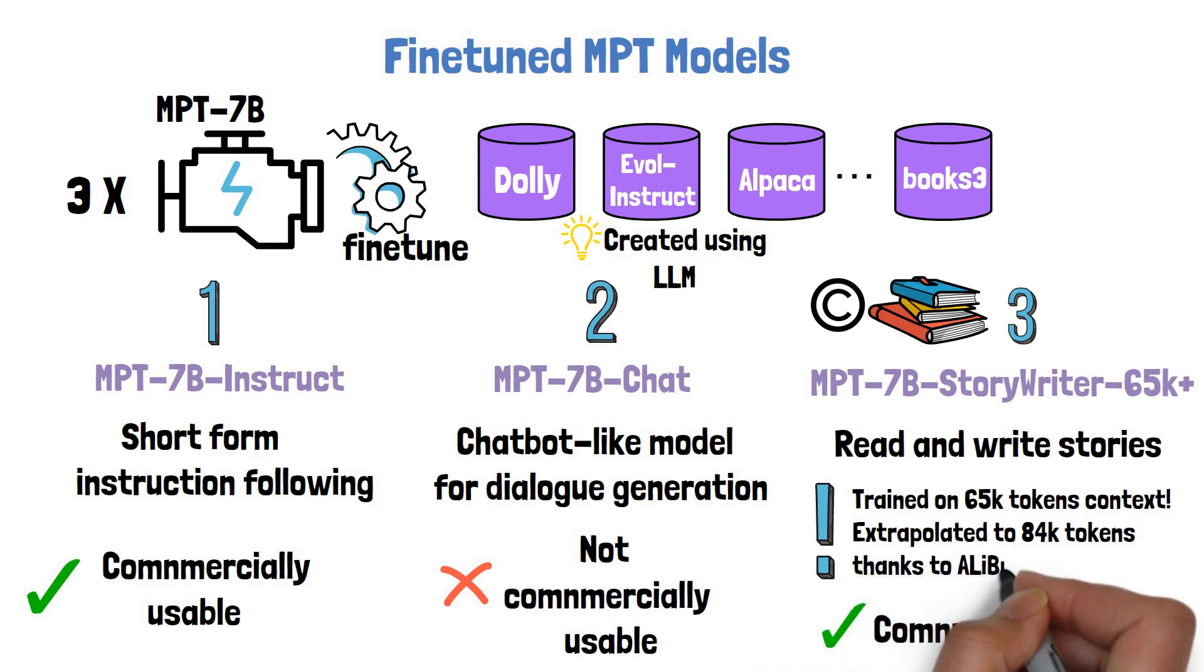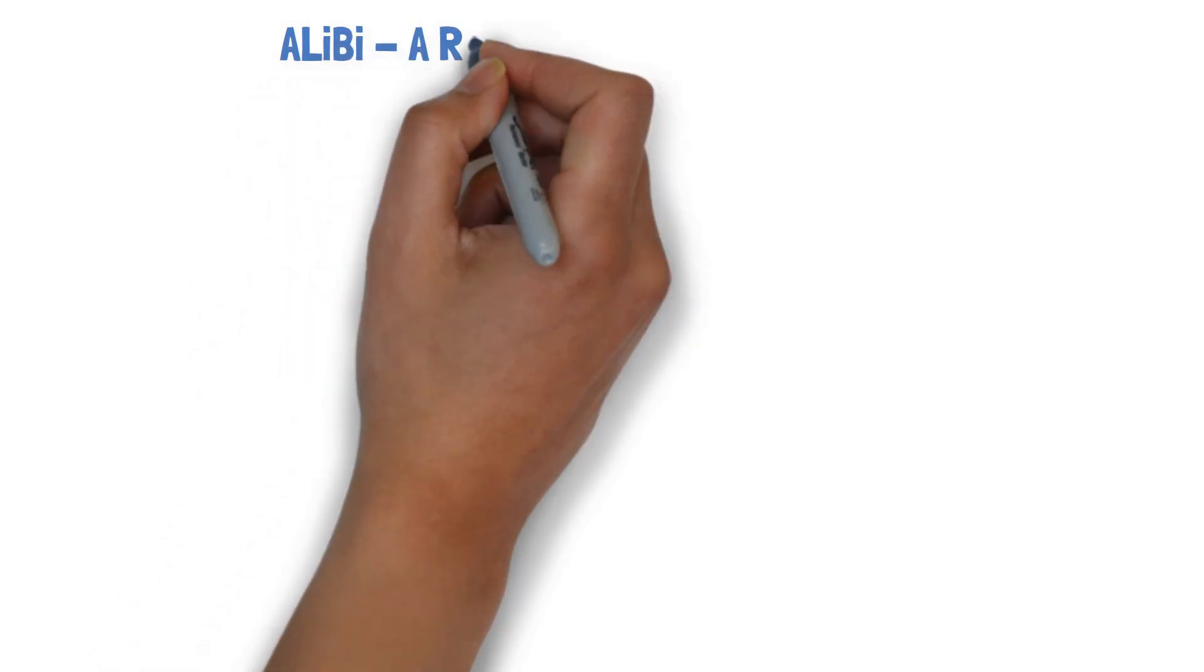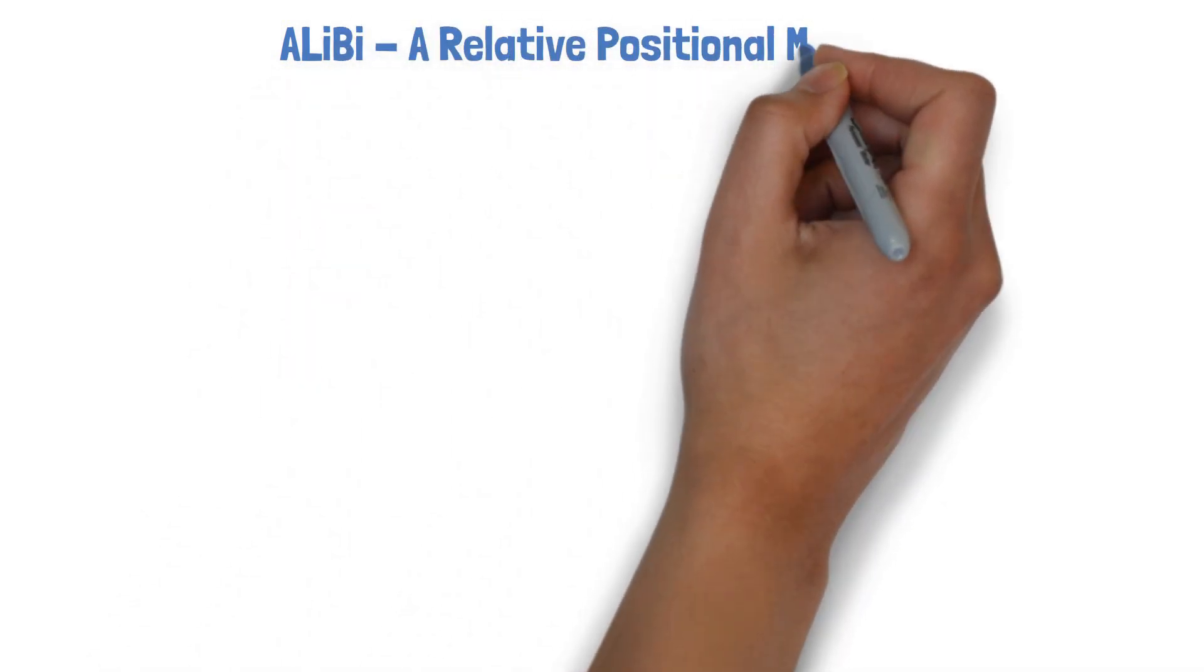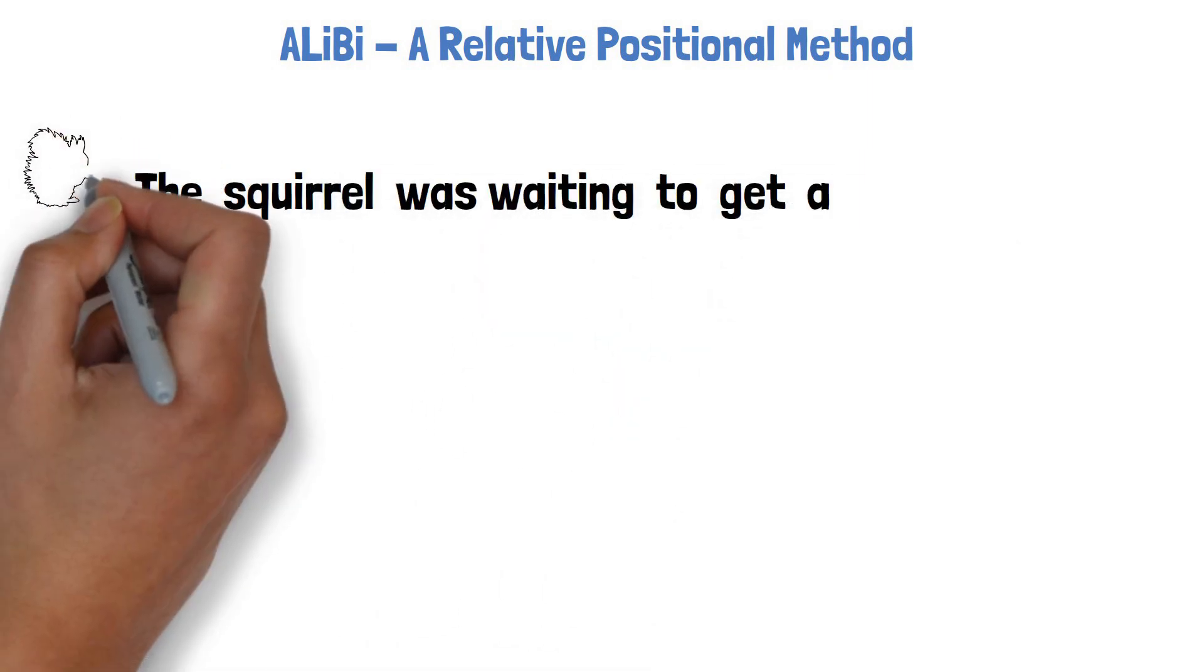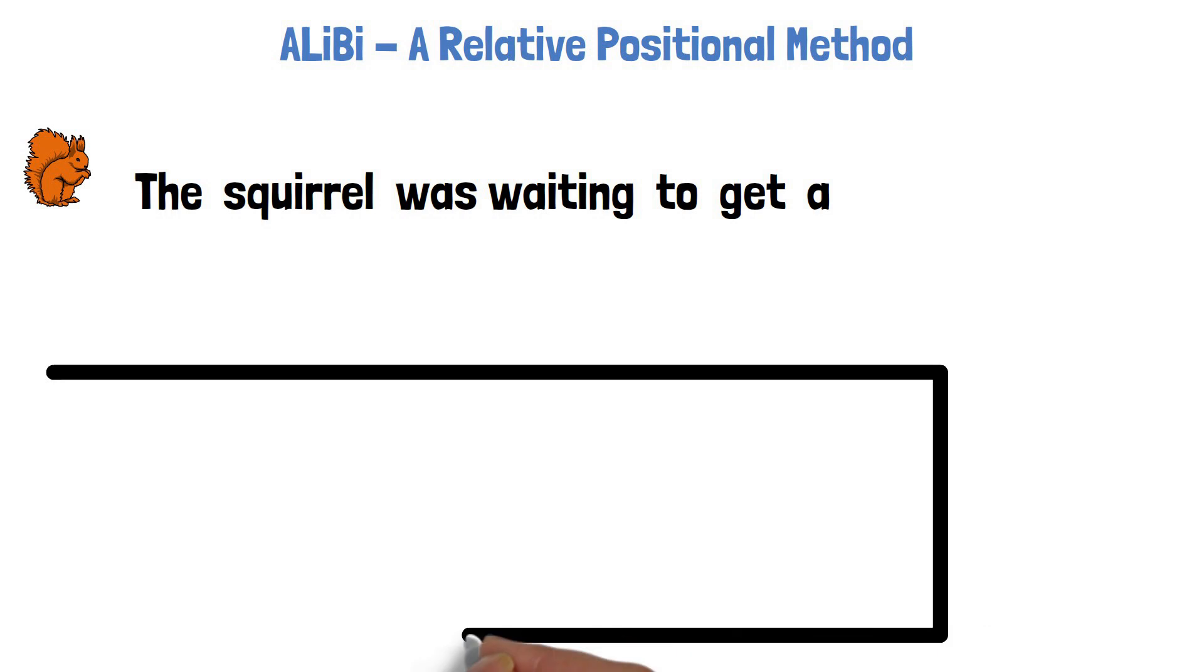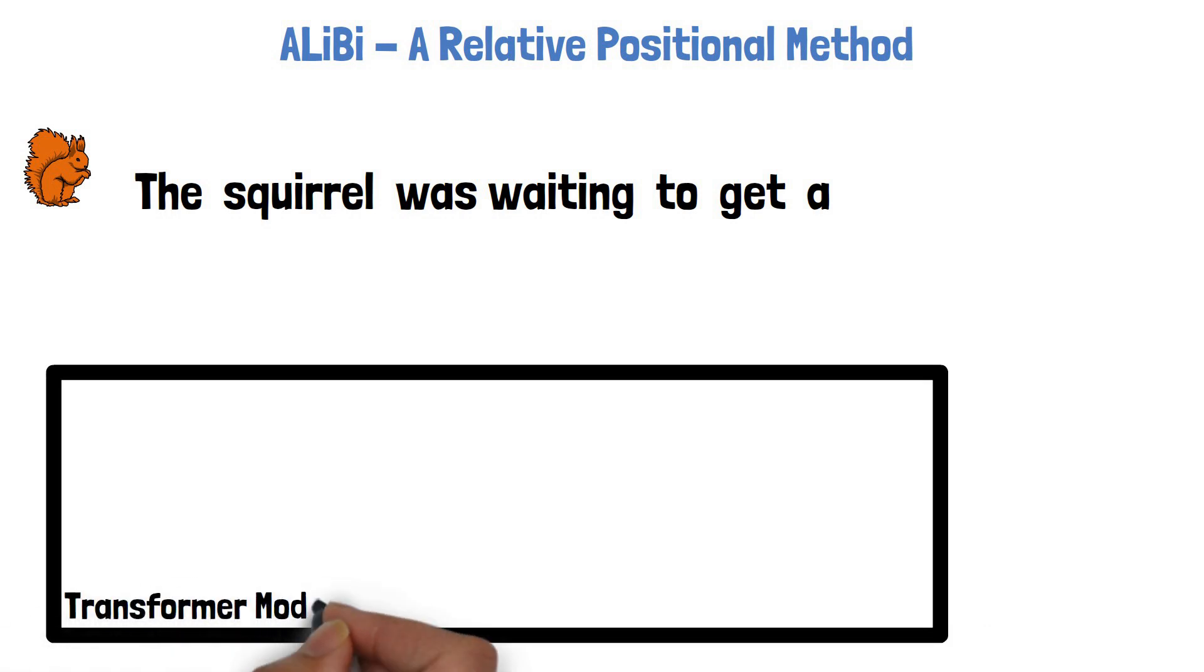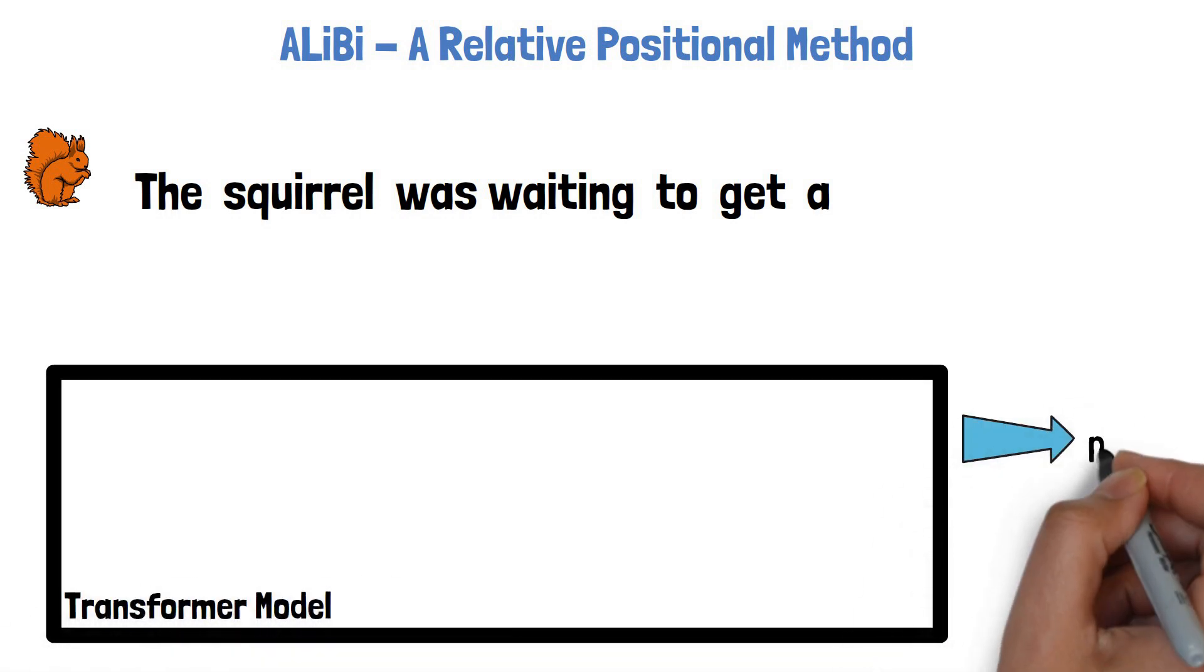So let's talk about what is this ALiBi which MosaicML attribute a lot of the success of the model to. ALiBi is a relative positional method. Let's understand what it means. Given an input sequence such as 'the squirrel was waiting to get a', we want to train our model to predict the next word in the sentence, a possible one in this case can be peanut.